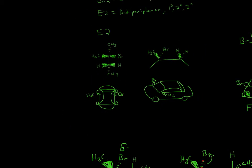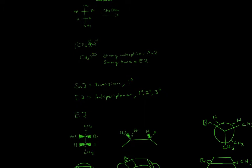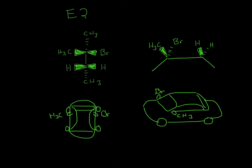I drew these cartoon cars to better show what I'm doing. In our Fischer projection, a vertical line means the bond is going into the page, and a horizontal line means it's coming out of the page. Since Br is on the horizontal, it's coming out of the page — so I drew a car to show this, with Br on the right side and CH3 on the left. Then I shift the entire molecule onto its side, just like shifting the car to its side — so Br is now pointing away and CH3 is pointing towards you.